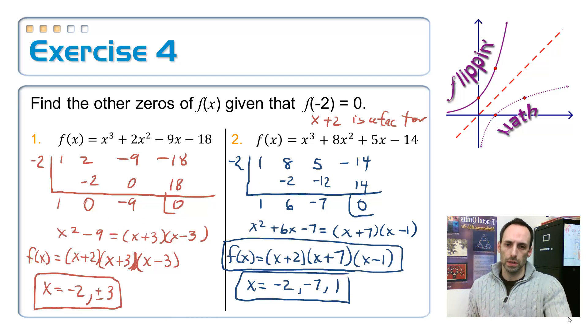And then there's this. Is that what you got? So synthetically dividing by the negative 2, and I get x squared plus 6x minus 7 left over. Factor that. That one's not too much trouble. Rewrite all my factors together, and then change all the signs to get all of the zeros. So there you go.